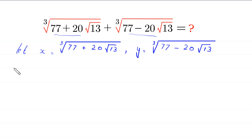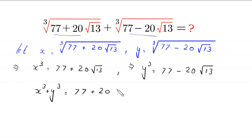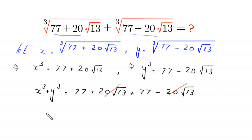Now, if we take the cube of both sides of the first equation, this implies that x cubed is equal to 77 plus 20 times root 13. And if we take the cube of both sides of the second equation, y cubed is equal to 77 minus 20 times root 13. Adding these two equations, x cubed plus y cubed equals 77 plus 77, which gives 154. The 20 times root 13 terms cancel.